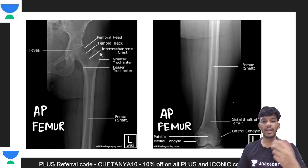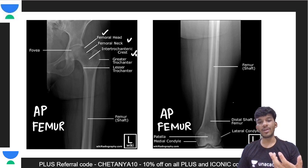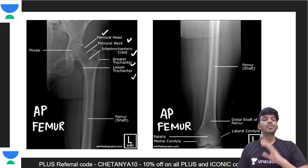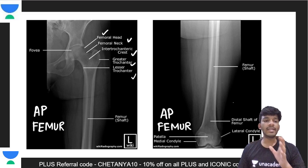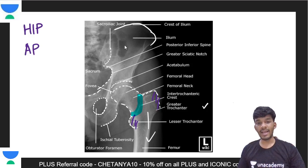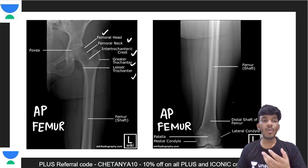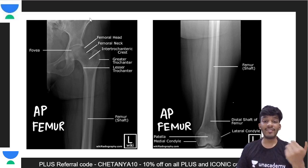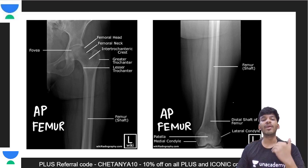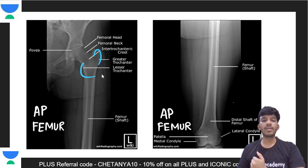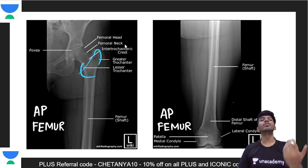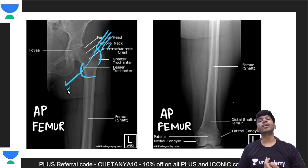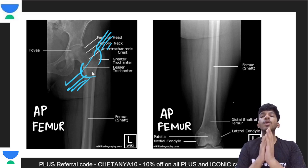Similarly for a femur — femoral head, femoral neck, intertrochanteric crest, greater trochanter, lesser trochanter. You should be able to point out these structures if you are looking at a left leg AP view of the hip. Your examiner might ask you in your anatomy viva: tell me which is the greater trochanter, which is the lesser trochanter, what is this line in between them? And then the viva might go on to ask about the attachments.